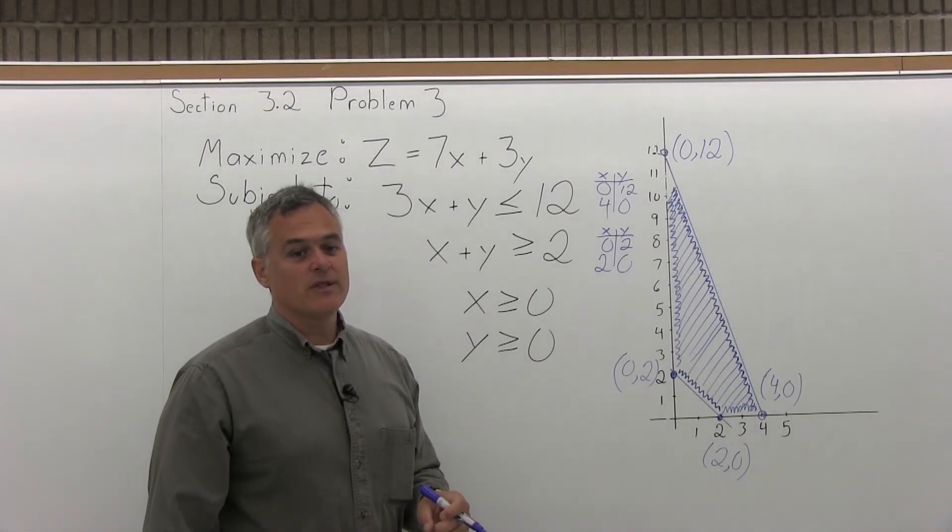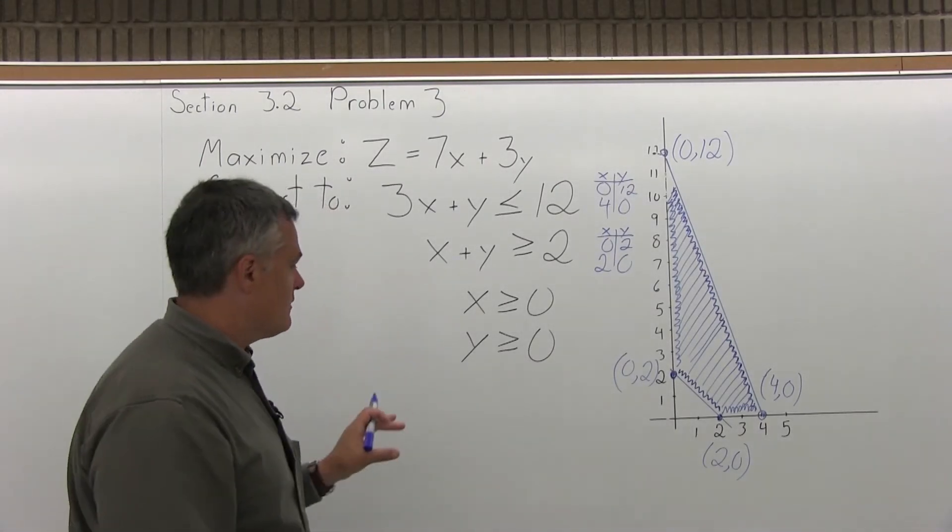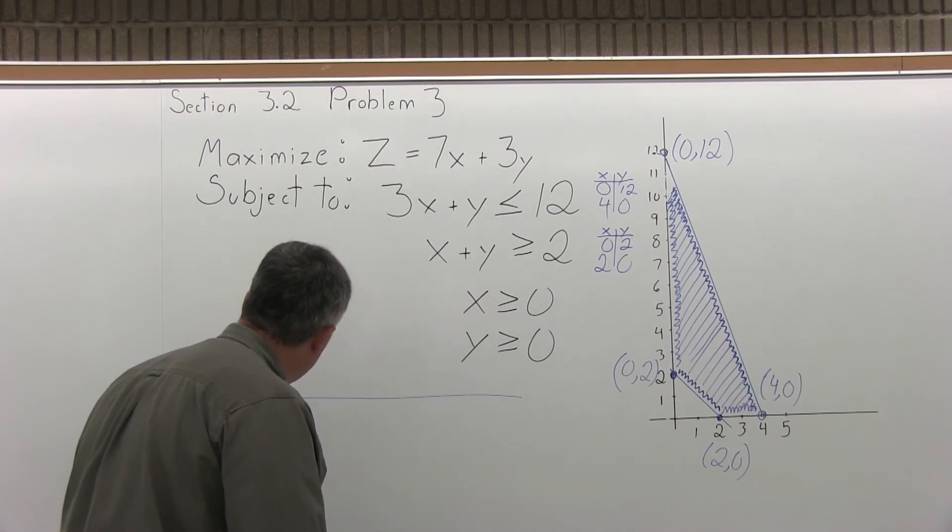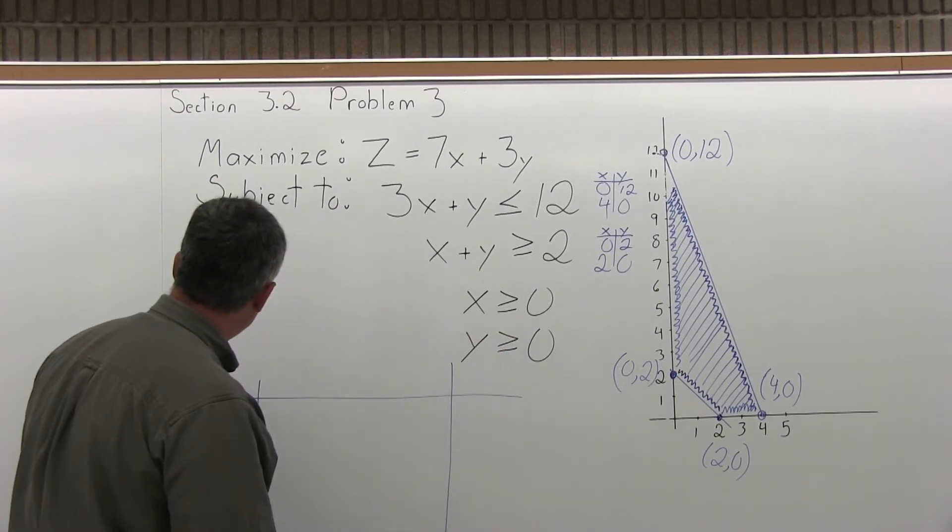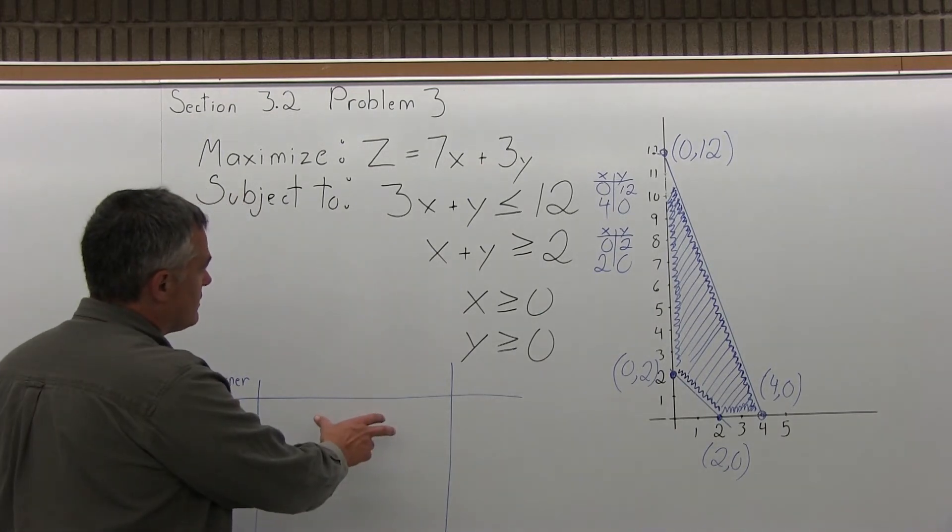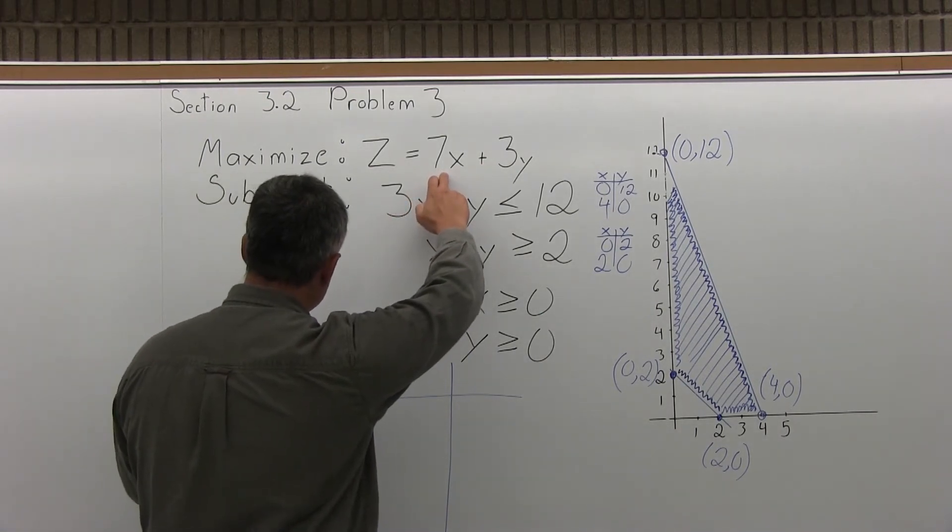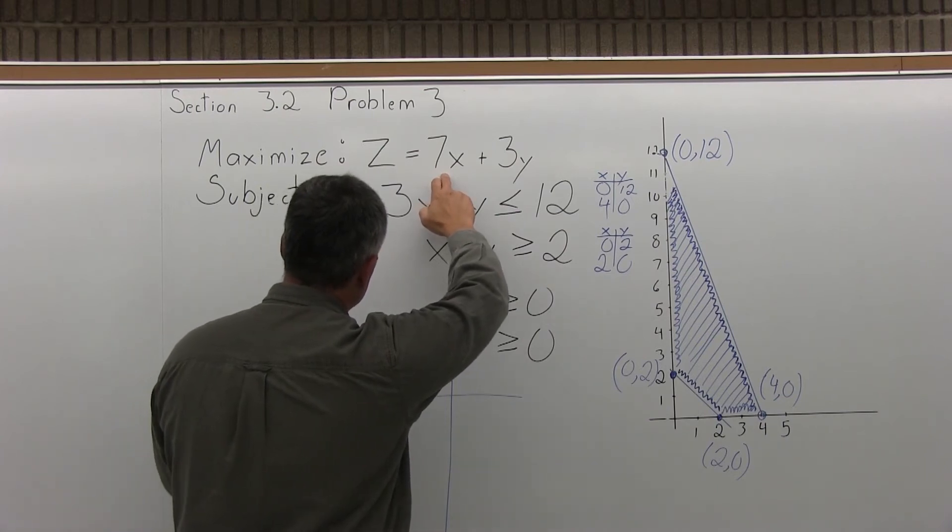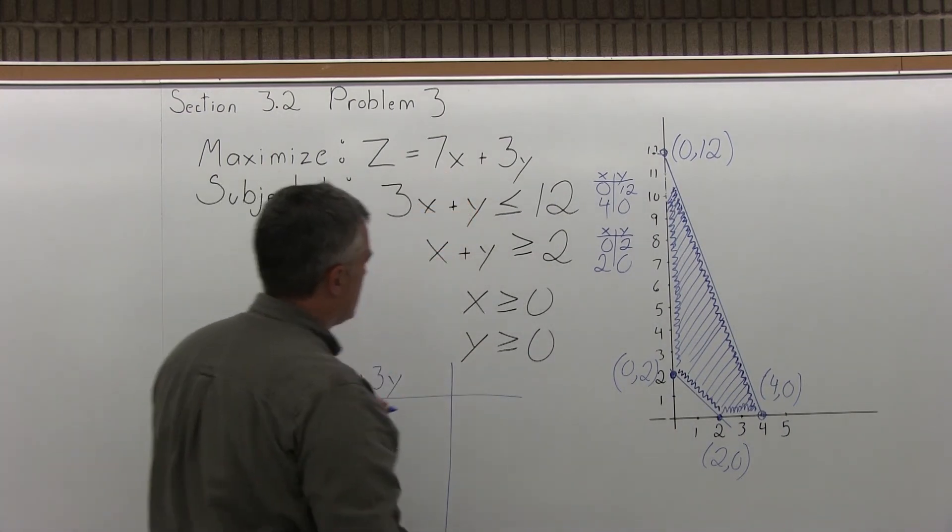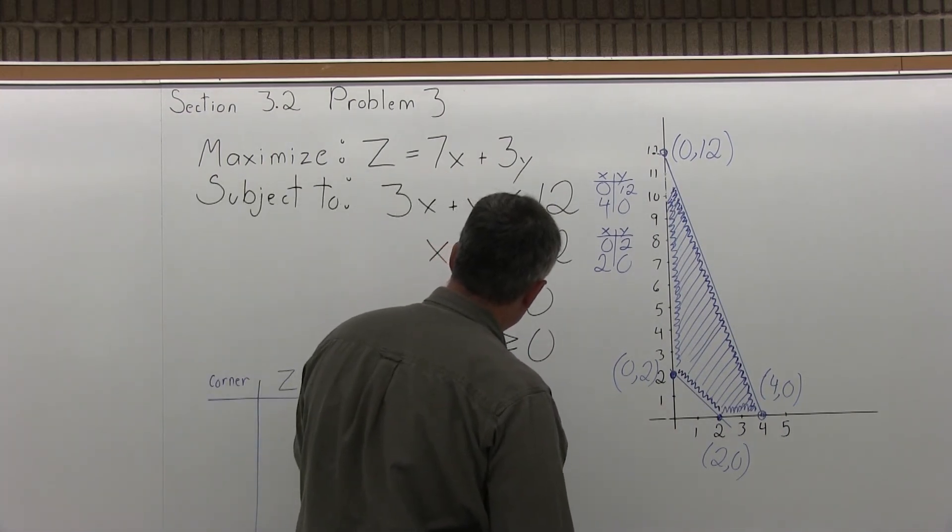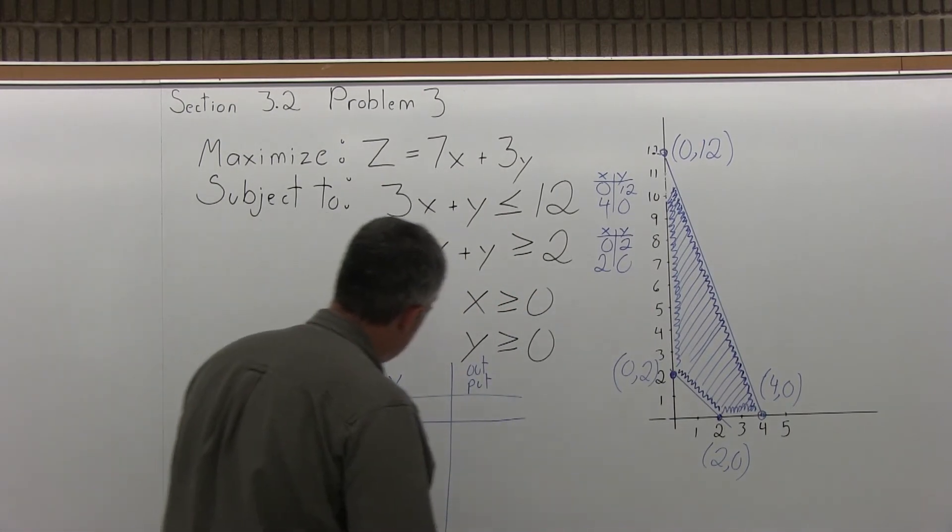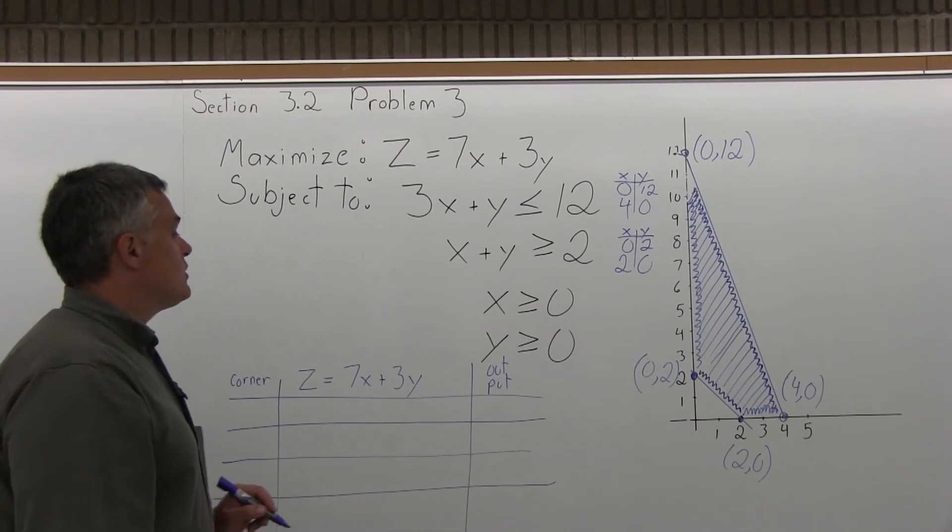Step three, set up that chart that has the objective function in the middle and fill it in. I'm going to add my three columns. The first column will be for the corner points. The middle column, which I leave wider, will be for the objective function. So now I'm going to use that equation z equals 7x plus 3y. That's the objective function. And then the last column is output.